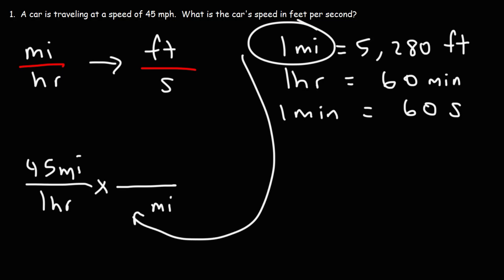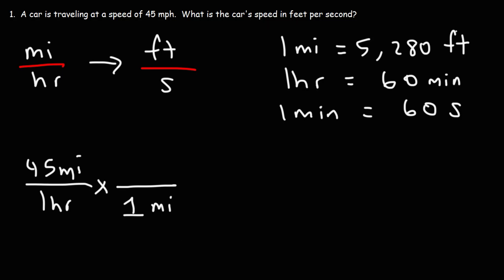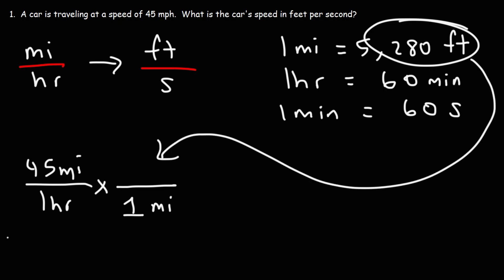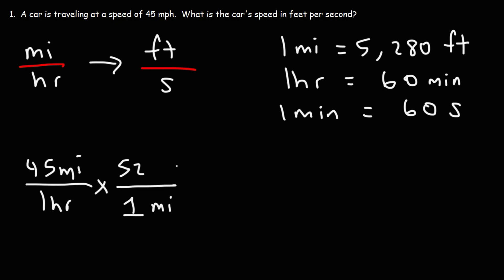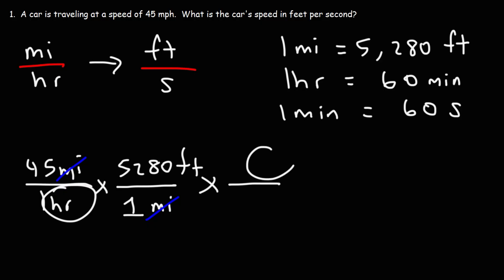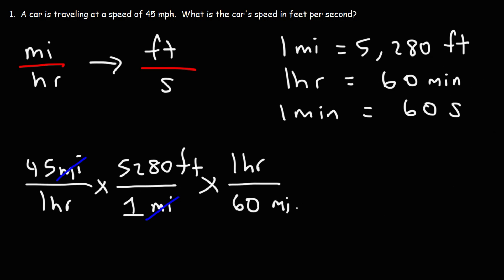This portion is going to go on the bottom — we have a 1 in front of miles — and the other part of the conversion factor, 5,280 feet, is going to go on top of the second fraction. Now we can cross out the unit miles. Next, let's focus on converting hours to minutes. The unit hours is on the bottom of the first fraction, so we need to put it on top of the third fraction, and then the other part of that conversion factor goes on the bottom. Now we can cancel the unit hours.